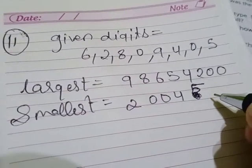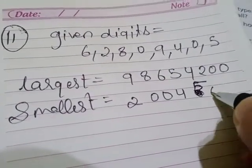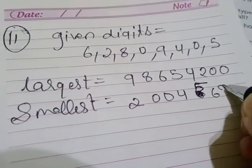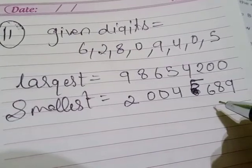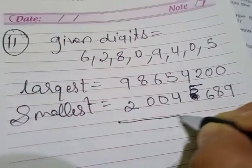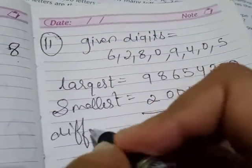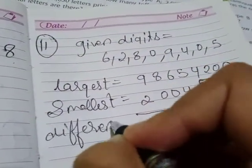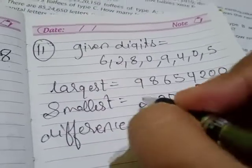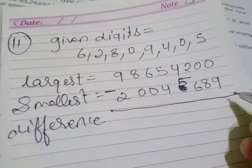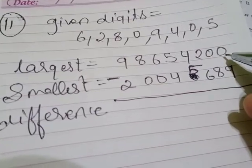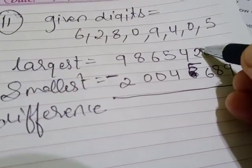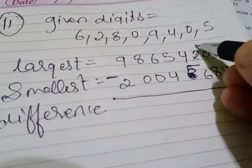Then 6, 8, and 9. So the smallest number is 2, 0, 0, 4, 5, 6, 8, 9. Now we have to find the difference, which means subtraction. We'll subtract the smallest number from the largest.